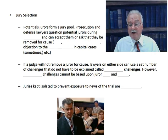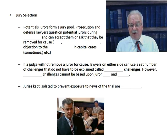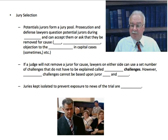Preemptory challenges cannot be based upon juror race or juror gender, because that would be discriminatory. But if a lawyer thinks a juror doesn't seem right and can't convince the judge of a bias, the lawyer can use one of a few preemptory challenges to reject that potential juror. Juries kept isolated to prevent exposure to news of the trial are called sequestered juries. At the end of the day they're transported to a hotel, newspapers have articles about the trial clipped out, they can't watch TV news about the trial, and they're told to be careful in conversations not to discuss the case.